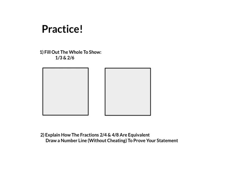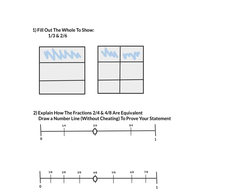Here are my answers to two previously asked questions. Number one, fill out the hole to show 1 third and 2 sixths. So, over on your left, you have your thirds, and over on your right, you have your sixths. Both are in the same hole. Because remember, you cannot change the size of the hole, just the size of the fractions inside them.